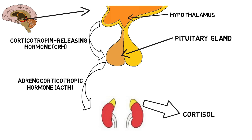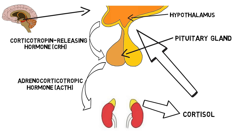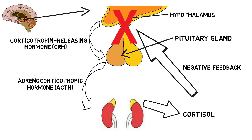The release of cortisol causes a number of changes that help the body to deal with stress. For example, it helps to mobilize energy like glucose, so the body has enough energy to cope with a prolonged stressor. When cortisol levels in the blood get high, this is sensed by receptors in areas of the brain like the hypothalamus and hippocampus, which leads to the shutting off of the stress response through what is known as a negative feedback mechanism.